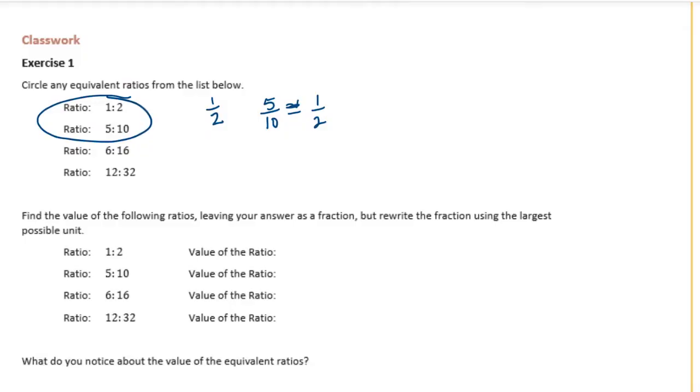Now we have 6 to 16. If I were to reduce 6 sixteenths, I can divide both 6 and 16 by 2, and I'll get 3 eighths, and that's simplest form. So this is 3 eighths, which means it's not equivalent to 1 half, so it's not equivalent to the ones above it.